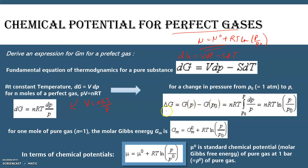Now suppose there is a change in pressure from P° to P. The change in Gibbs free energy will be ΔG = G(P) − G(P°) = nRT ∫(P° to P) dP/P, which finally gives ΔG = nRT ln(P/P°).